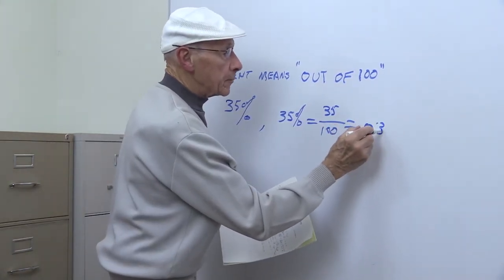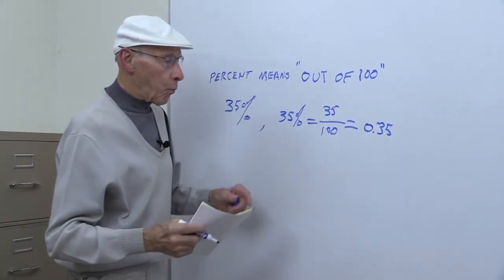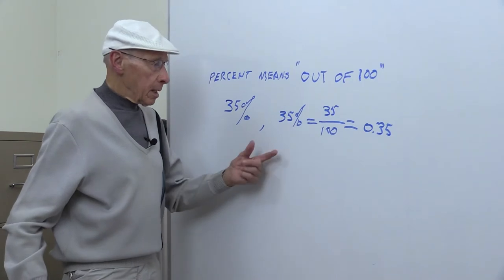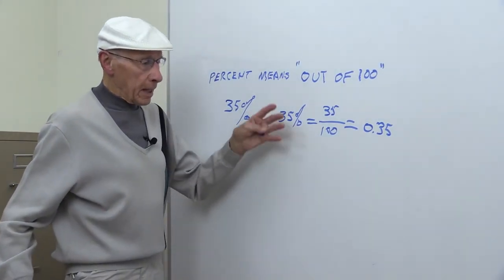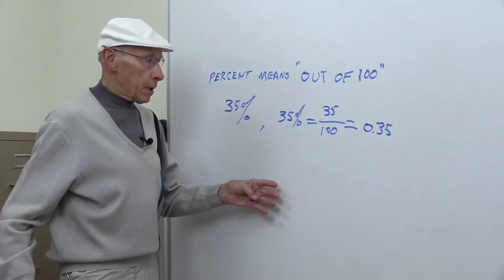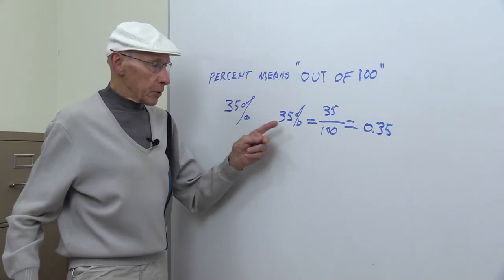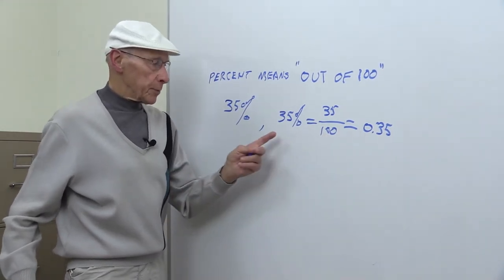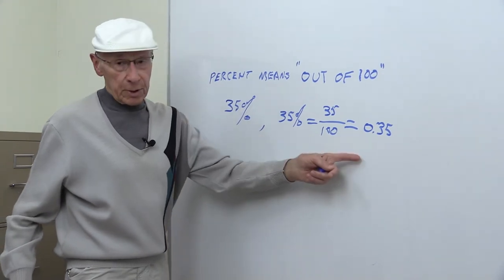You might ask why you should care about that. I gave you a table with a number of items to change: percent to decimal, decimal to percent, fraction to percentage, fraction to decimal.